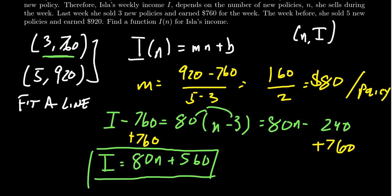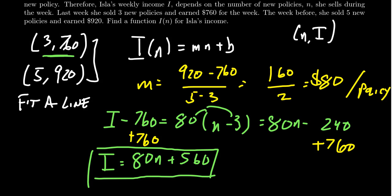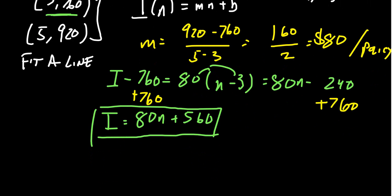So this right here tells us this is the function model for Isla's commission. She makes eighty dollars per policy she sells. She also has a base salary of five hundred and sixty dollars. So if we record our findings in the following way right here, we see the following. So Isla earns eighty dollars per policy sold and has a base salary of five hundred and sixty dollars per week.